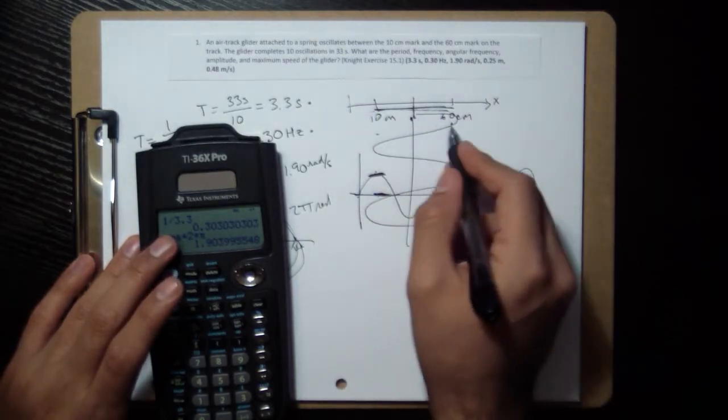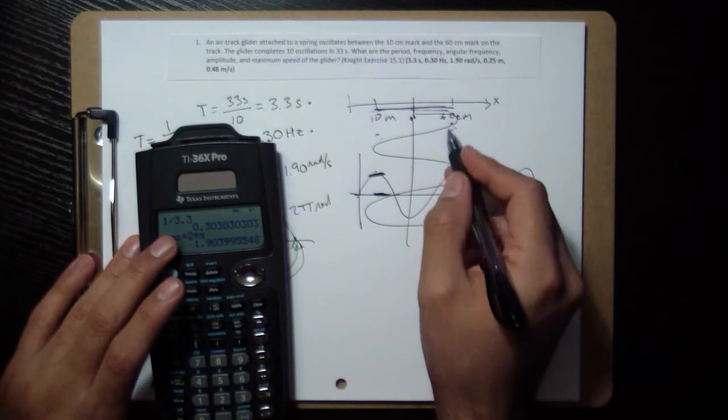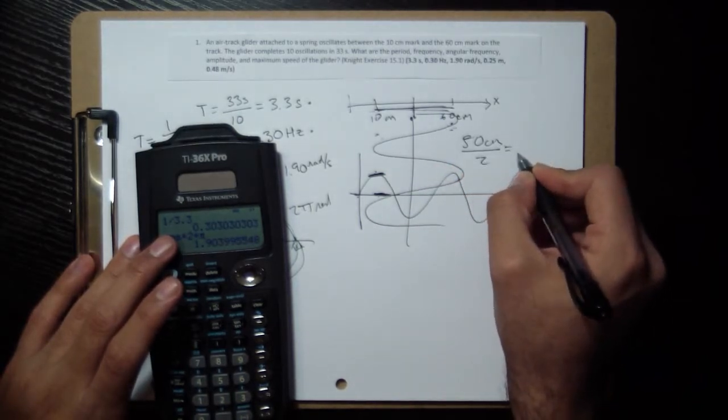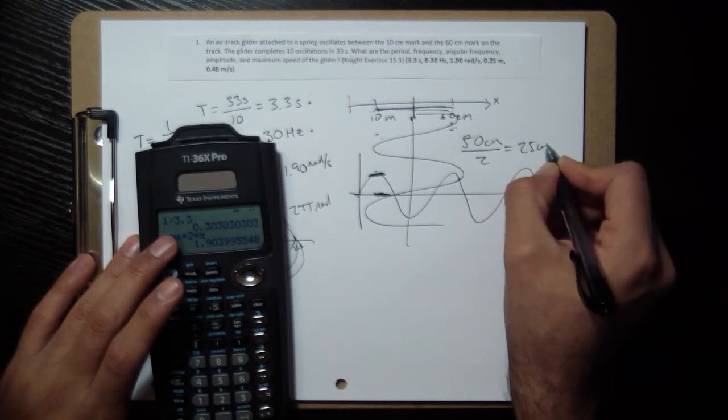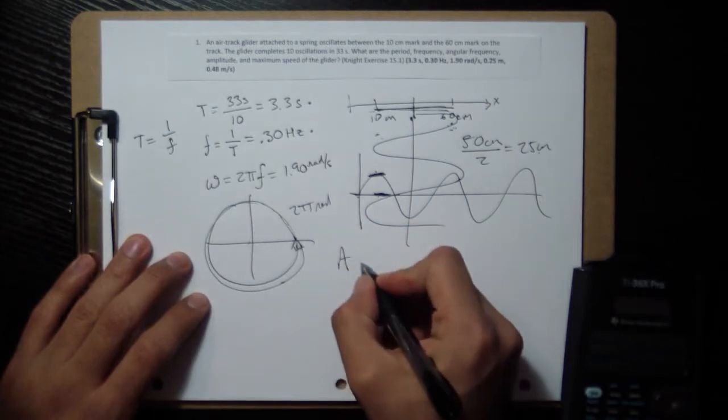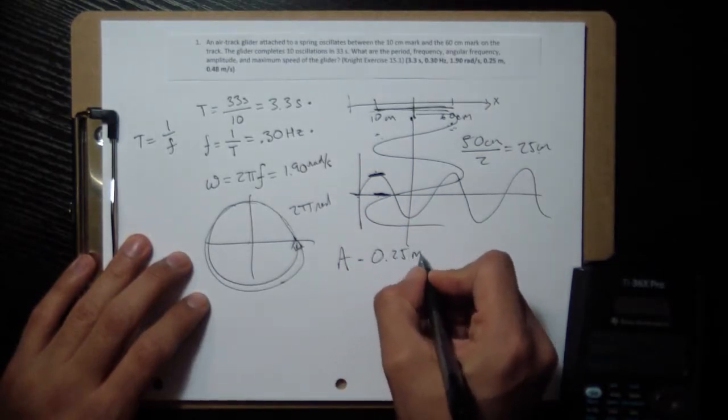So we want to know what half of this total distance is. 60 minus 10 is 50 centimeters. We divide that by 2 to get the 25 centimeters, convert that to meters, is 0.25 meters. So the amplitude is 0.25 meters.